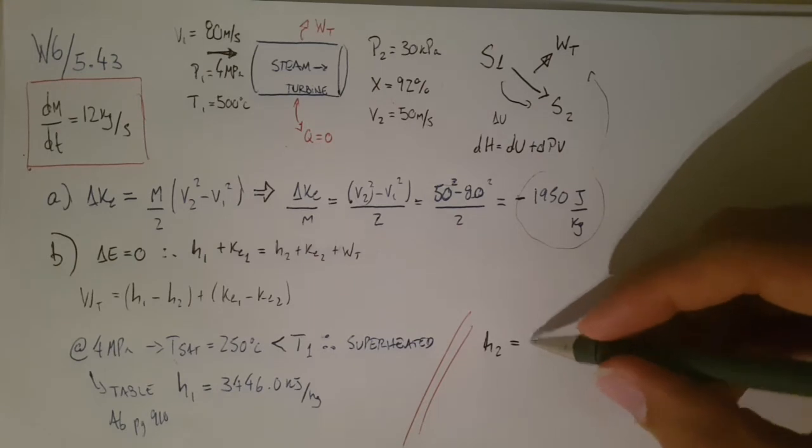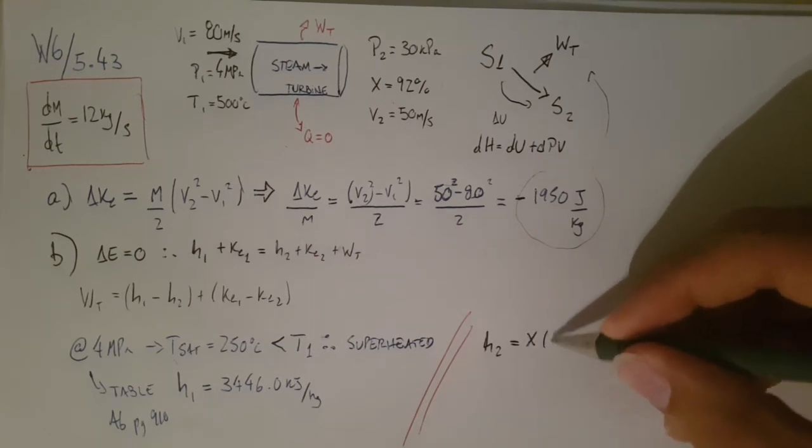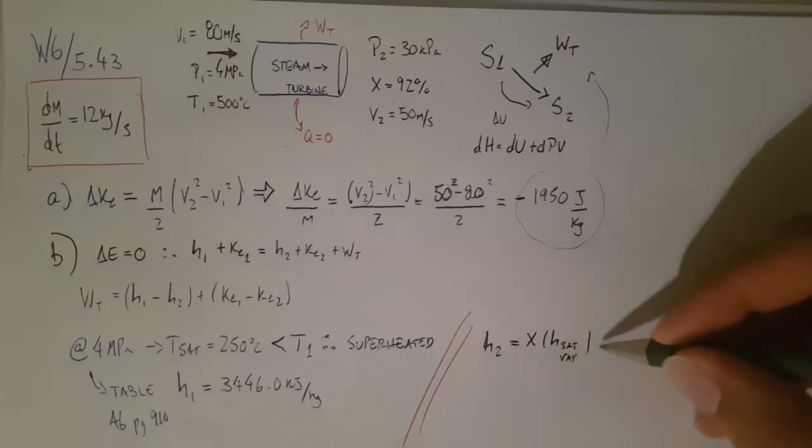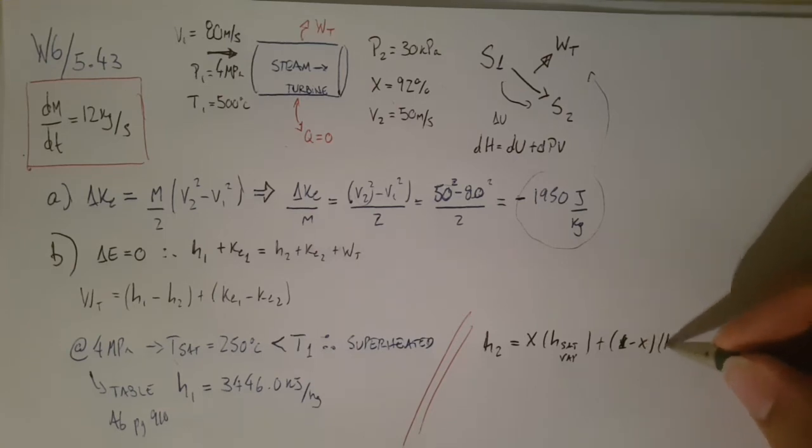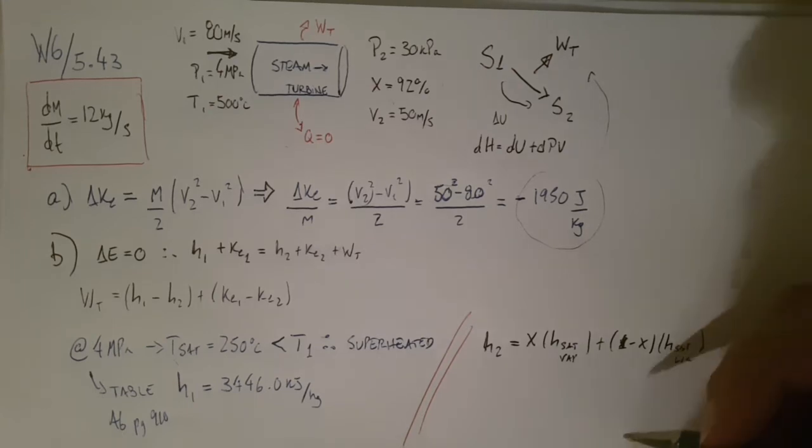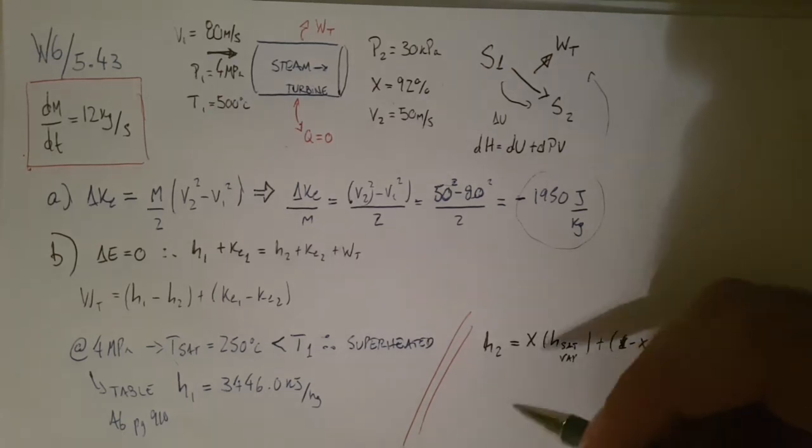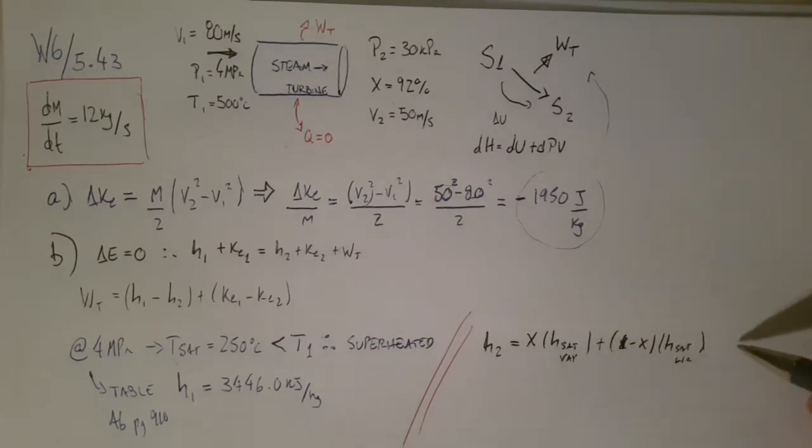Let's do a little bar here to find H2. We know it's a saturated mixture, so it's going to be the quality times whatever the saturated vapor energy is, plus 1 minus the quality, times whatever the saturated liquid is. And both I can grab on the table. Okay, so I'm going to be looking to find these guys. I'm going to be looking at table, this is going to be table A5.